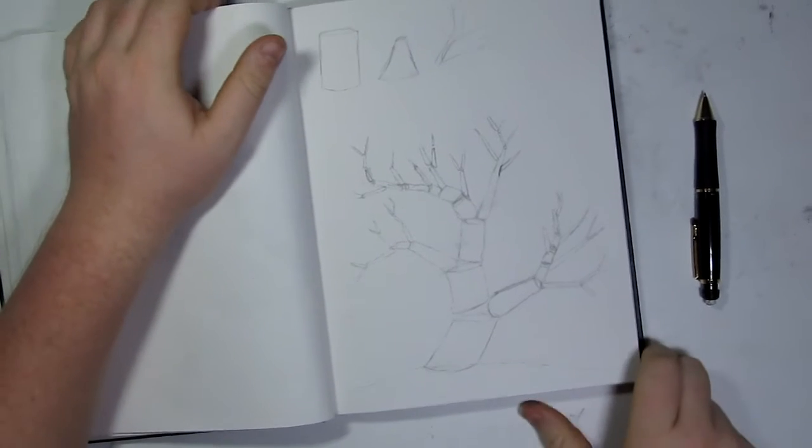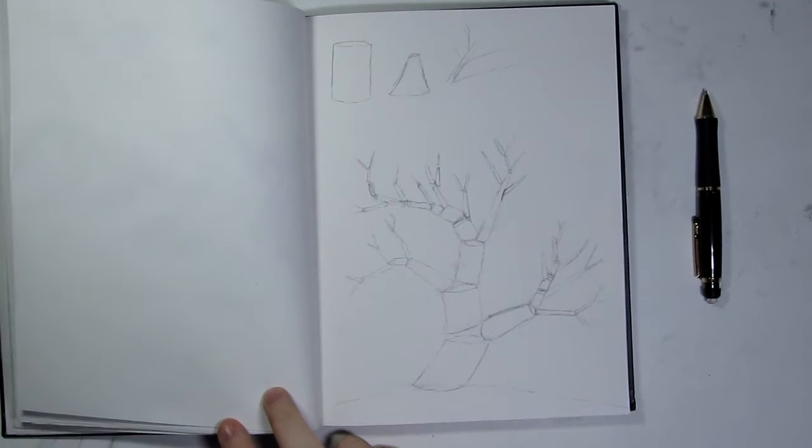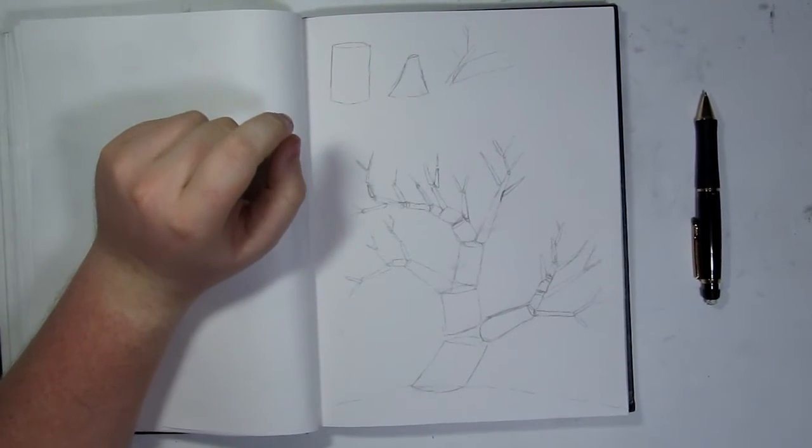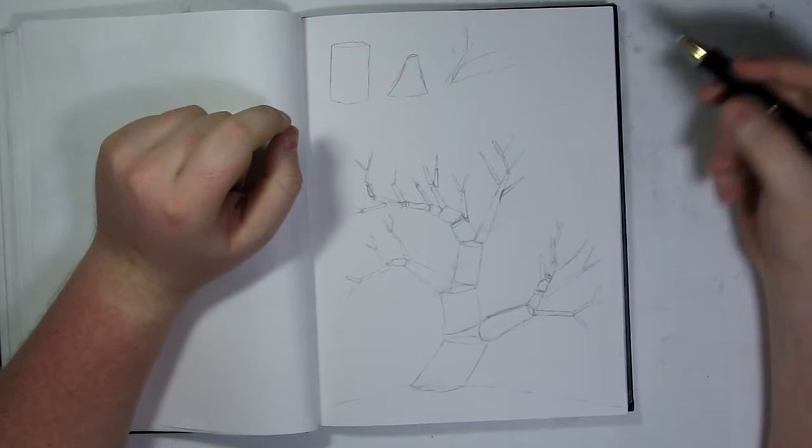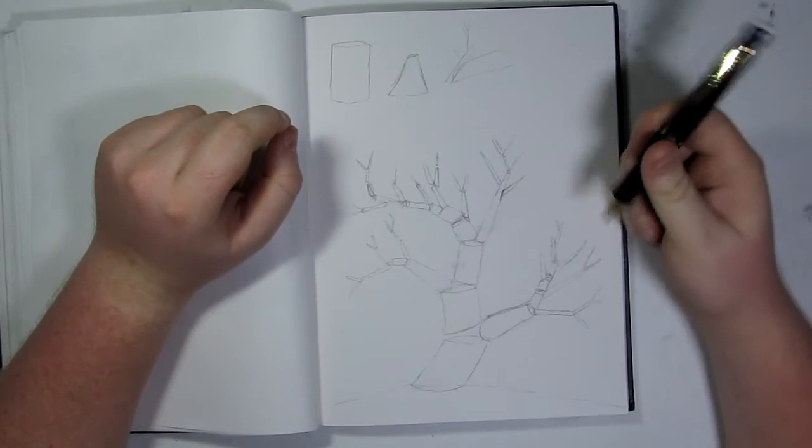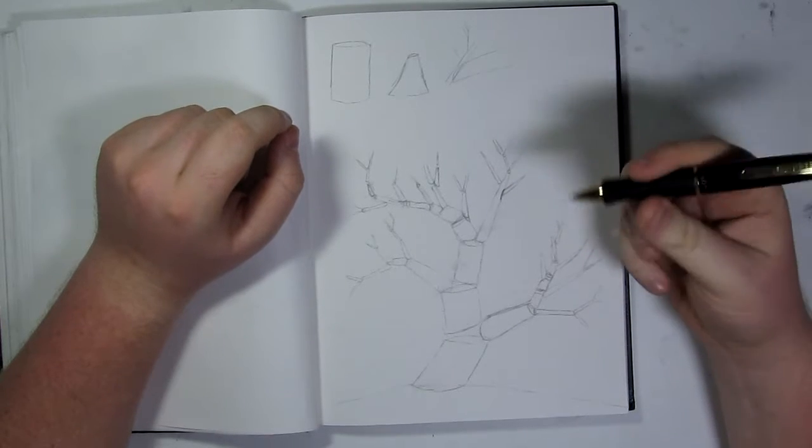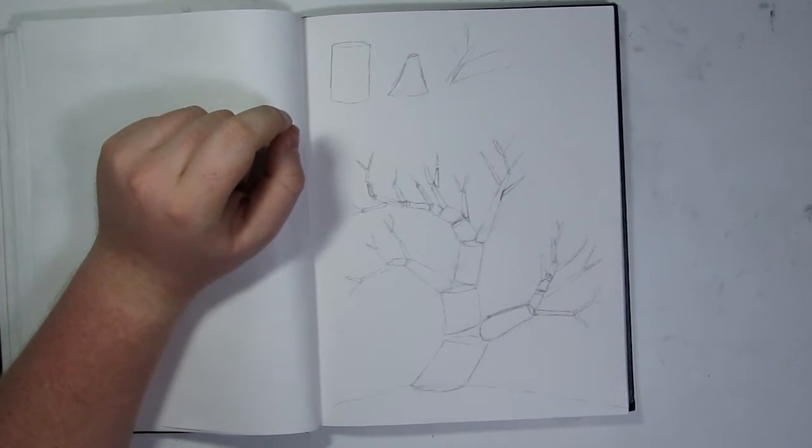Now I've got the tree shape to the general way I would like it to look. This whole process I was using a mechanical pencil with either 2B or HB lead in it, which doesn't really make a difference because they're relatively the same, but I just use that for the initial sketch.